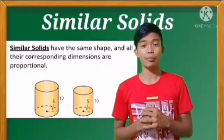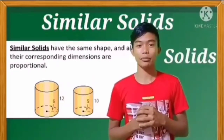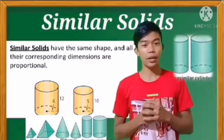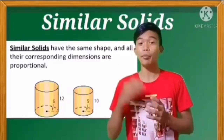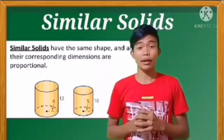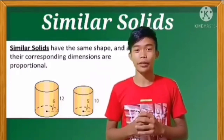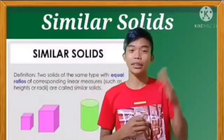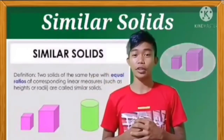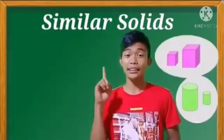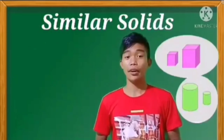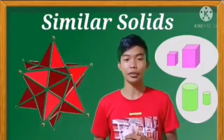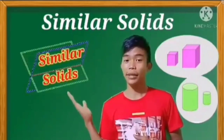Similar solids are very much like similar polygons, except they are solids and not polygons, so they have the same shape — meaning they are both cylinders, or both pentagonal prisms, or the same shape — and all the corresponding dimensions are proportional. These two cylinders are similar because they are both cylinders and because their corresponding dimensions are proportional. In other words, similar solids are those that have the same shape but not the same size, which means corresponding segments are proportional and corresponding faces are similar polygons. The surface area and volume of similar solids have a relationship related to the scale factor. Two solids of the same type with equal ratios of corresponding linear measures such as height or radii are called similar solids.